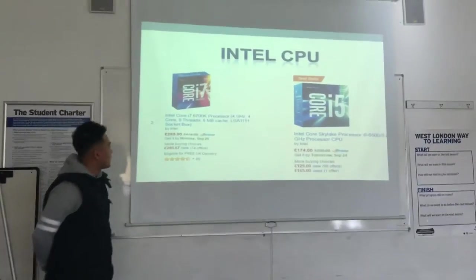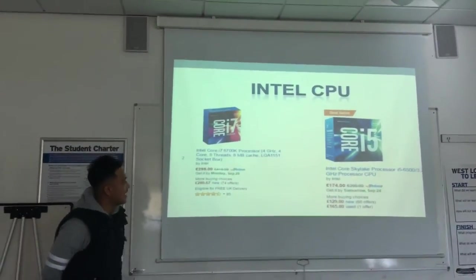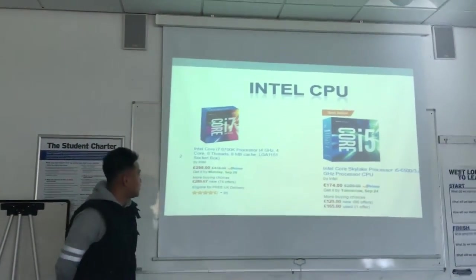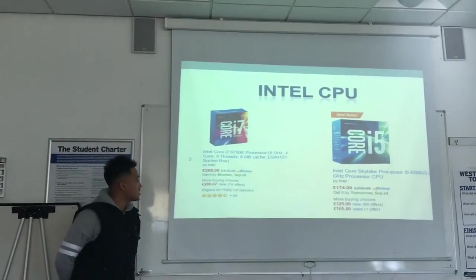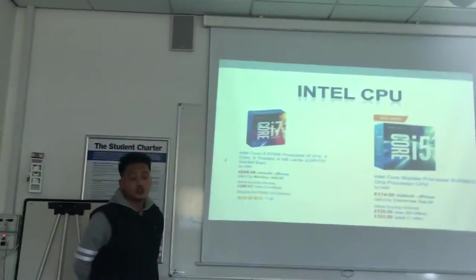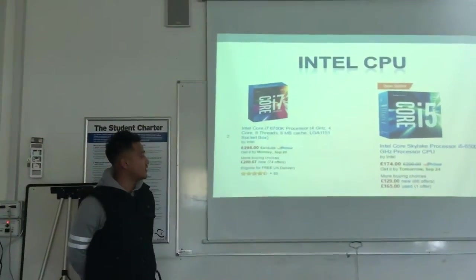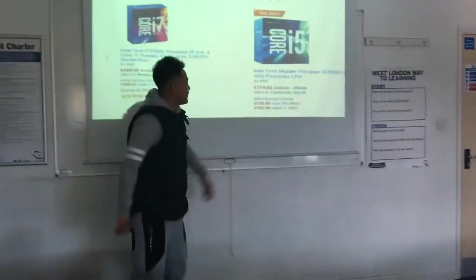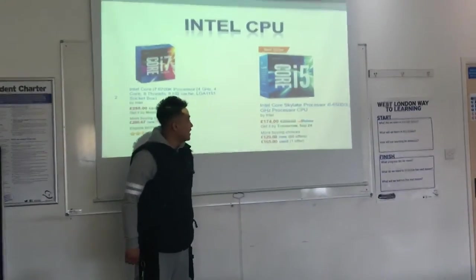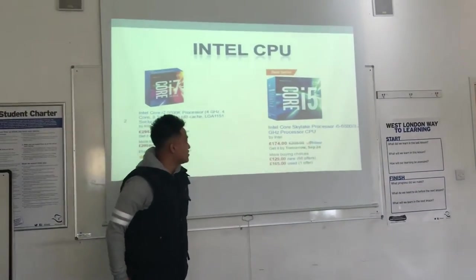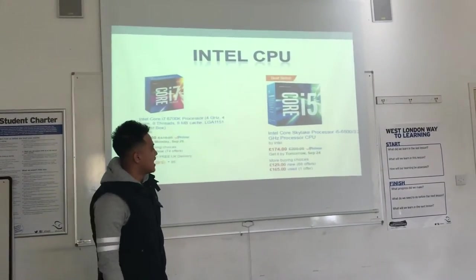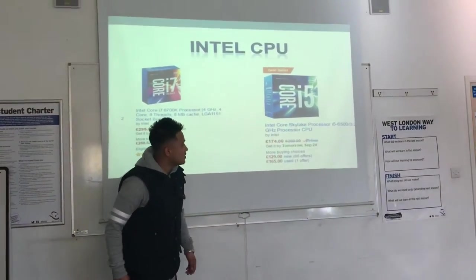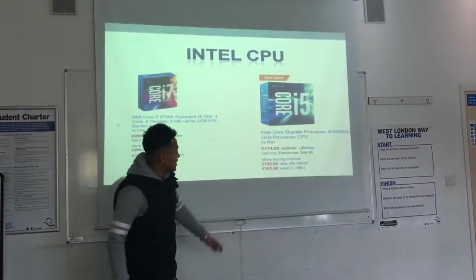Intel CPU — the Intel Core i7 is the latest model. As you can see, the cost is around £200 to £300. This is the Intel Core i5 Skylake processor. As you can see, the price is around £100 to £200.